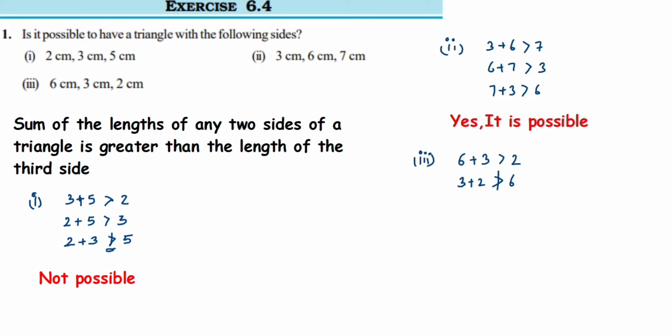That's it — we've done all three problems. We simply applied the rule that the sum of any two sides of a triangle must always be greater than the third side. If all three combinations satisfy this condition, then it is possible to have a triangle. If you have any questions, leave a comment below. Thank you for watching.